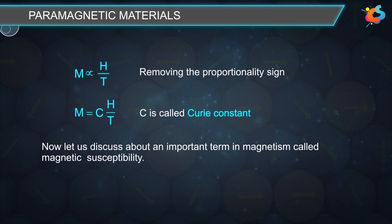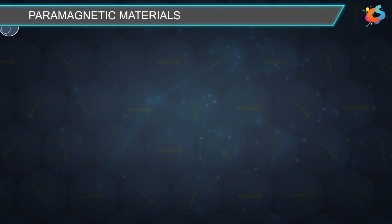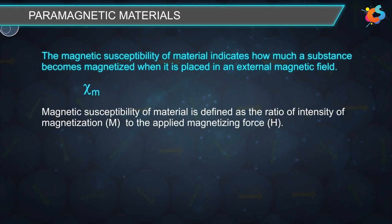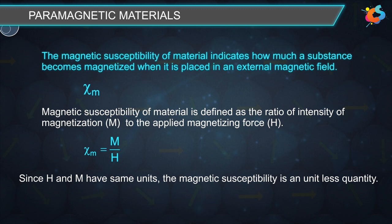Now let us discuss an important term in magnetism called magnetic susceptibility. The magnetic susceptibility of a material indicates how much a substance becomes magnetized when placed in an external magnetic field. It is denoted by χ_m. Magnetic susceptibility is defined as the ratio of intensity of magnetization M to the applied magnetizing force H: χ_m = M/H. Since H and M have the same units, magnetic susceptibility is a dimensionless quantity.